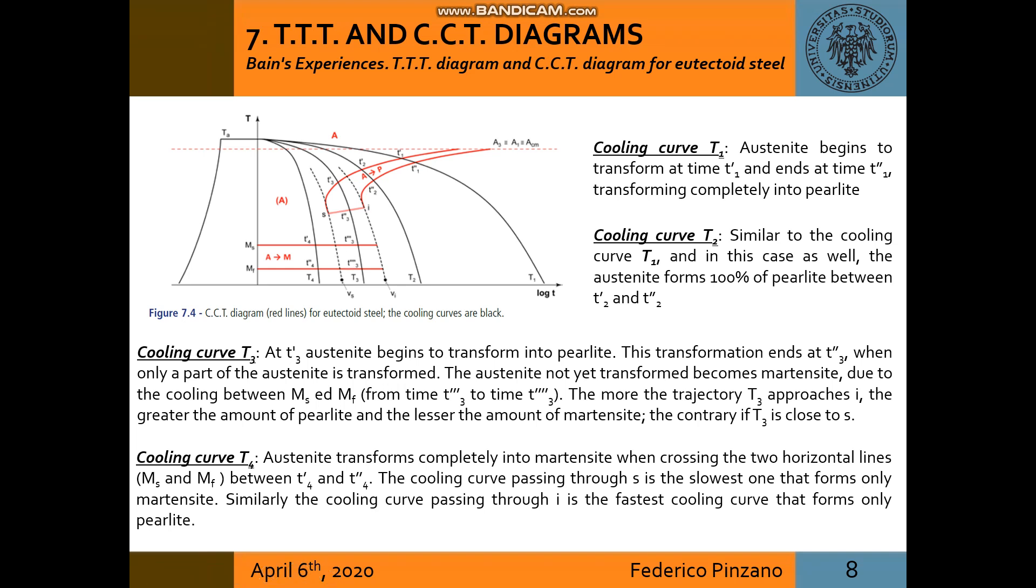Cooling curve T4: austenite transforms completely into martensite when crossing the two horizontal lines, MS and MF, between T4 first and T4 second.